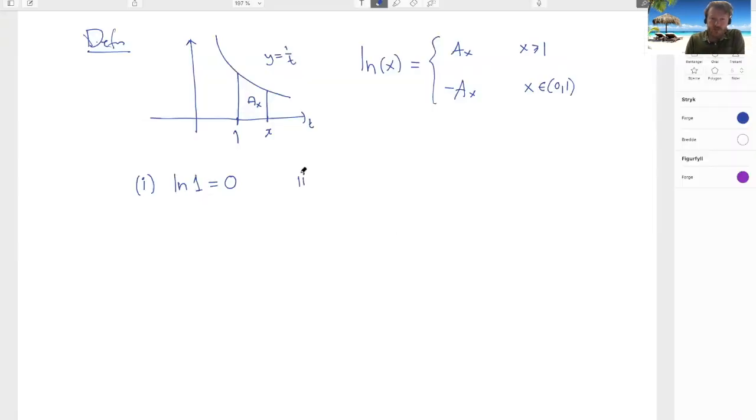And then 2, 2 is a bit more scary looking, but it's a double inequality for the logarithm, which looks like this, which is actually quite easy to give a geometric proof for.